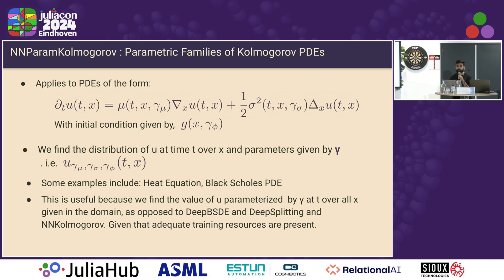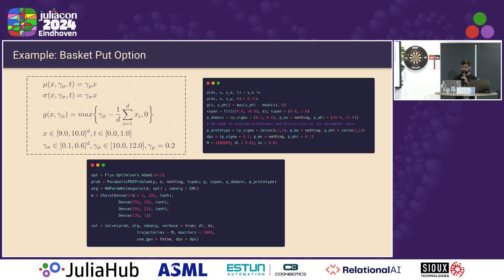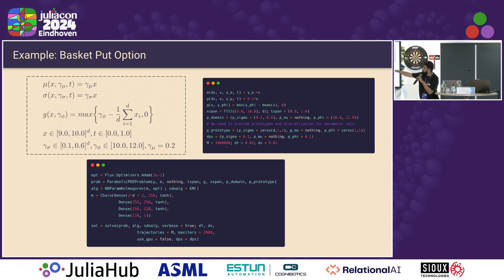The most interesting one is NN-param-Kolmogorov, where we try to solve parametric families of Kolmogorov PDEs. We get a solution over all parameters, time, and x. Some examples of Kolmogorov PDEs include the heat equation and the Black-Scholes PDE. We're going to look at a downstream case: a basket-put option. Because we find the solution over all parameters, we have to provide a parameter domain as well — we find a solution over the full domain of the parameters.